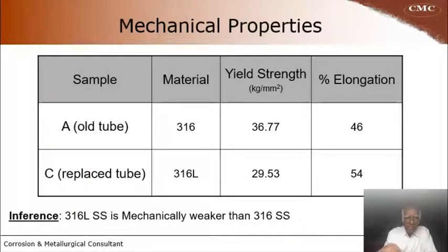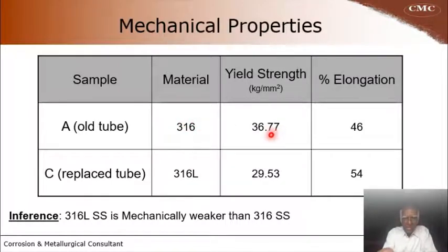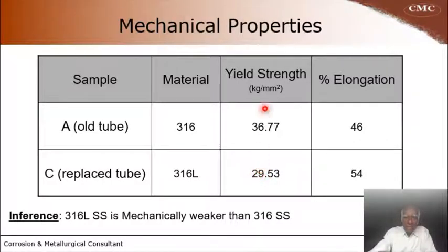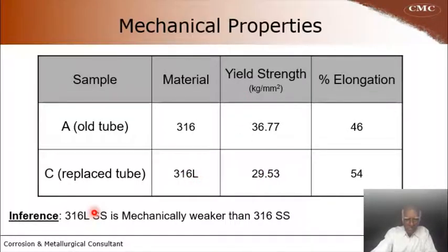In addition to the chemical composition difference, the mechanical properties differ significantly. 316 SS has a yield strength of about 37 kg/mm², whereas 316L SS has only about 29.5–30 kg/mm². This represents roughly a 20–25% difference — 316L SS is mechanically weaker than 316 SS.